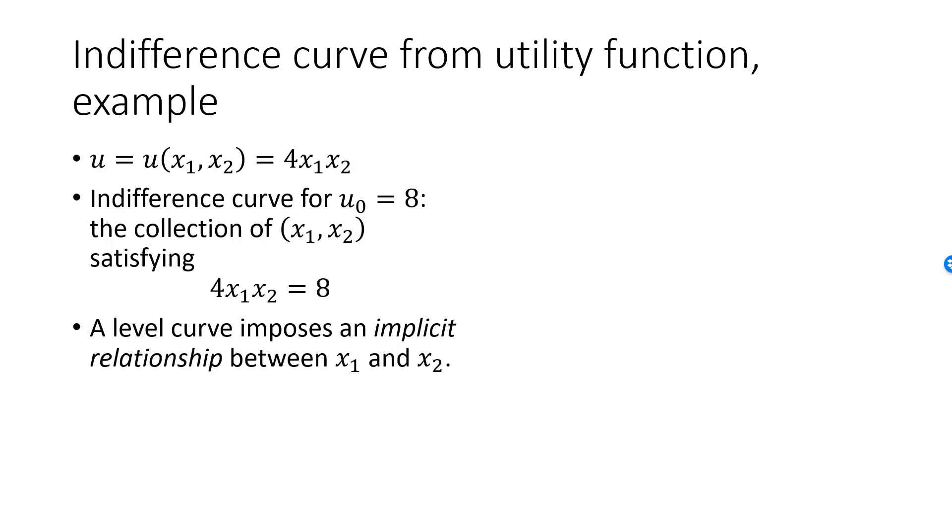A level curve, which in our case is an indifference curve, will always impose an implicit relationship between the variables of the function. In some cases, although not in all cases, it's possible to convert an implicit relationship into an explicit one.